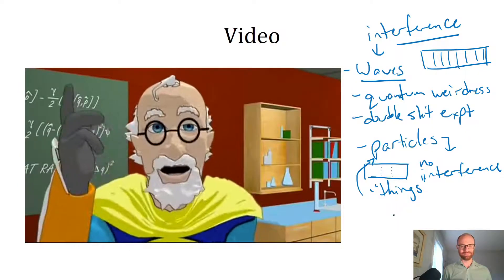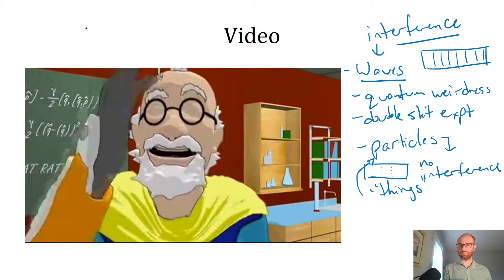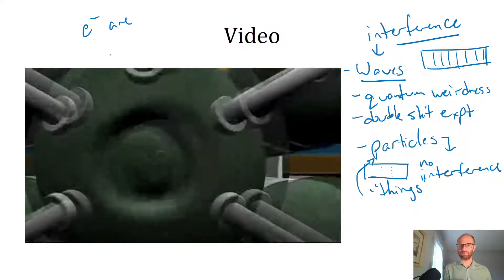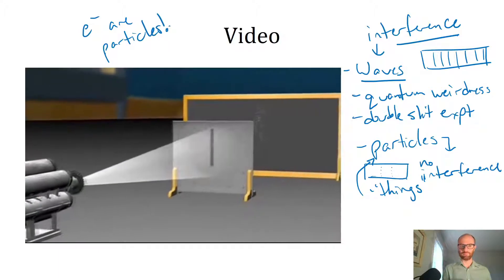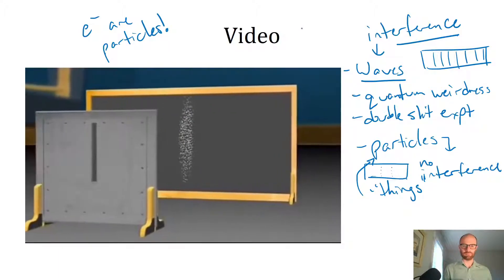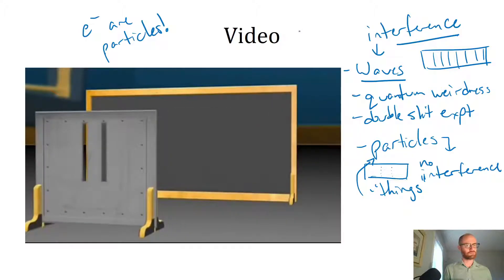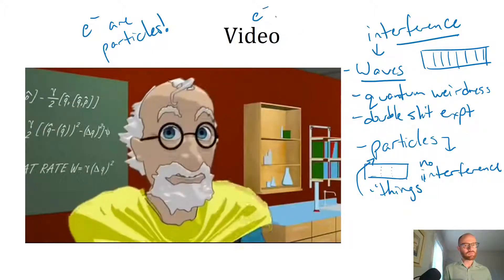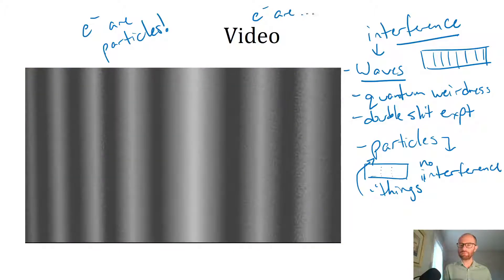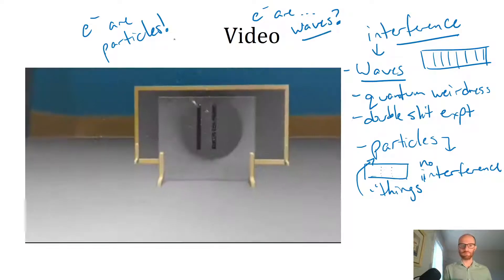An electron is a tiny, tiny bit of matter, like a tiny marble. Let's fire a stream through one slit. It behaves just like the marble, a single band. So if we shoot these tiny bits through two slits, we should get, like the marbles, two bands. What? An interference pattern!